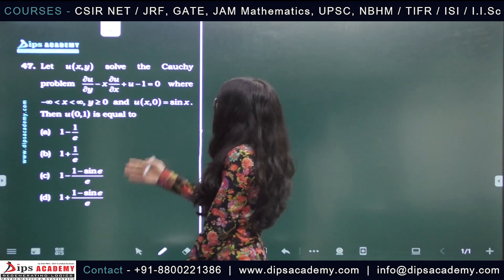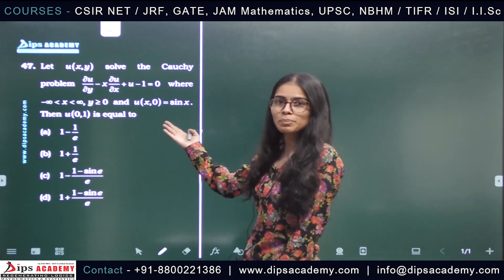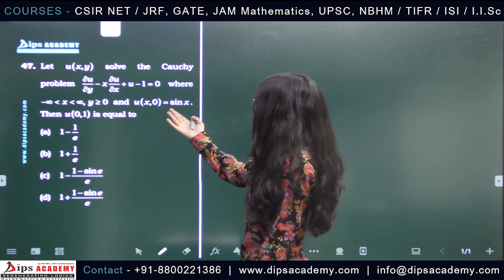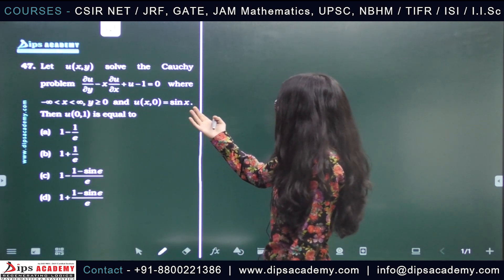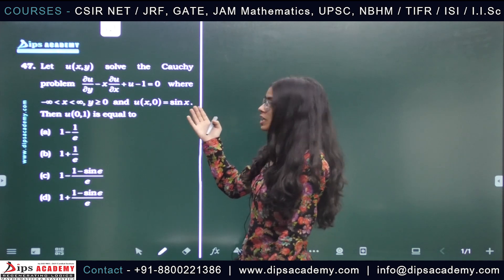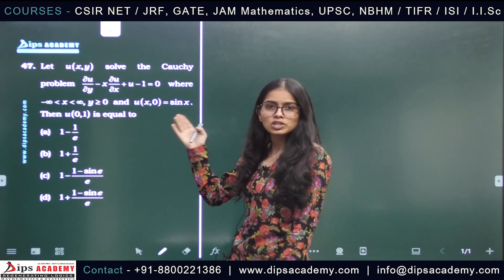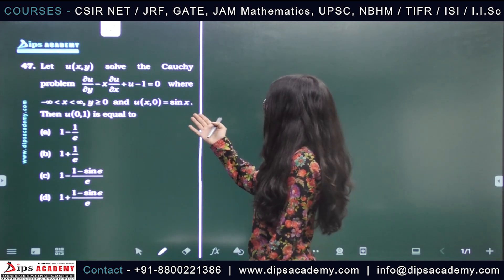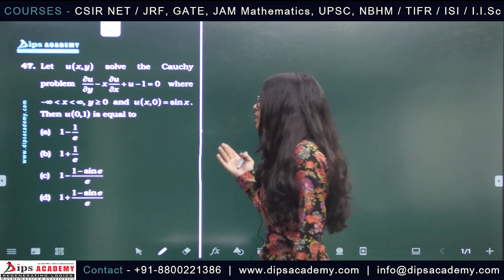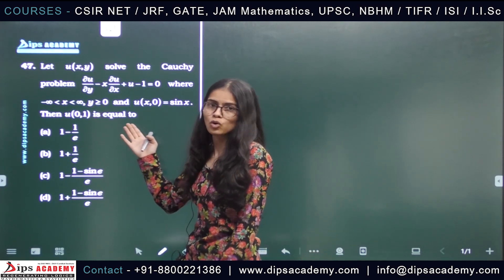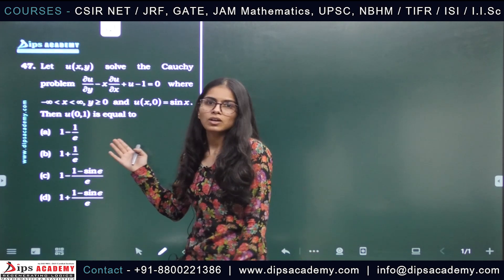We are given with the Cauchy problem which is ∂u/∂y minus x·∂u/∂x plus u minus 1 equals 0, and we are given with the Cauchy condition u(x, 0) equals sin x. We have to find the value of u at (0, 1).